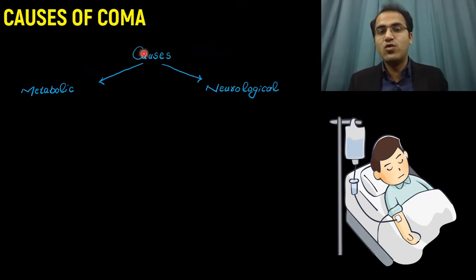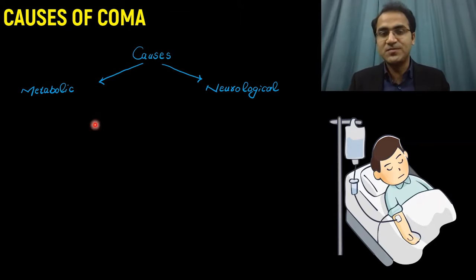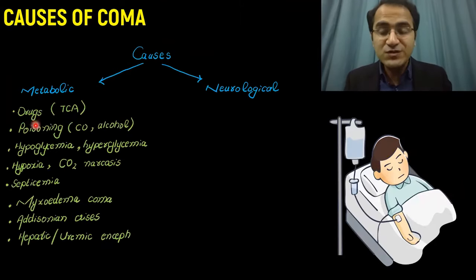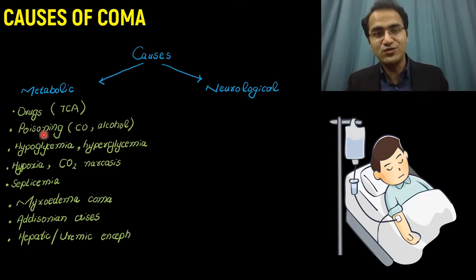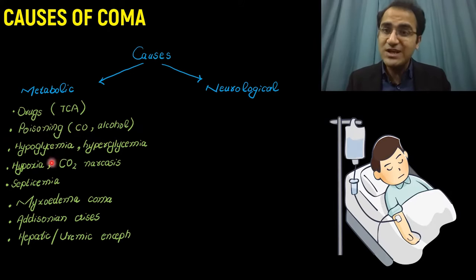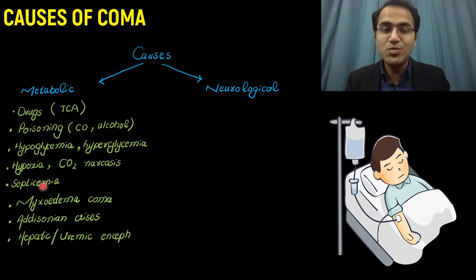The causes of coma are divided into two major categories: metabolic causes and neurological causes. In the metabolic causes, the major ones are drug intoxication like TCA overdose, antidepressant overdose, poisoning, carbon monoxide poisoning, alcohol intoxication, hypoglycemia, hyperglycemia, hypoxia, CO2 retention, and CO2 narcosis in COPD patients.